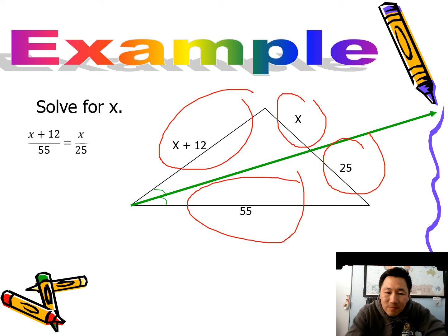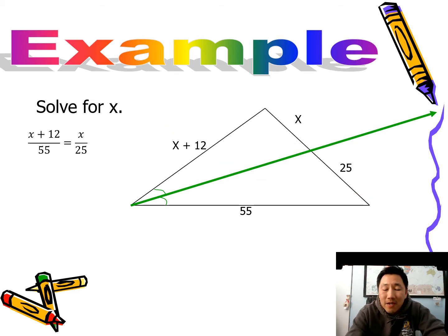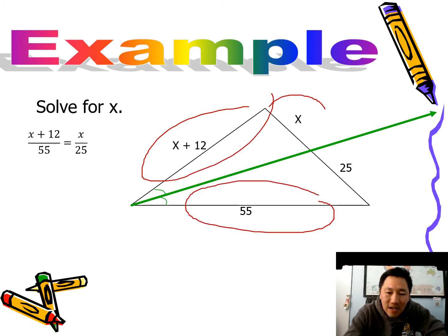You can do it other ways as well, but if you are consistent and go back and forth, back and forth, then you should be able to get the right answer at the end. So there's the setup: X plus 12 is proportional to this 55, and then X proportional to that 25.